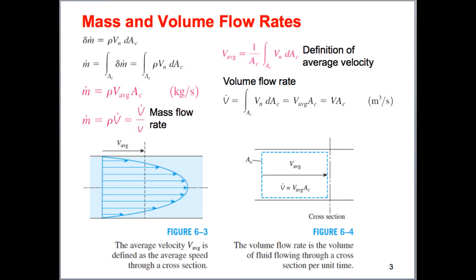To describe how mass is conserved, we need to define something called mass flow rate. Up to now we just talked about total mass in a closed system, but here we're talking about flow rate. Maybe this is water passing through a pipe — we need a way to measure or quantify how much flow is coming through this pipe.